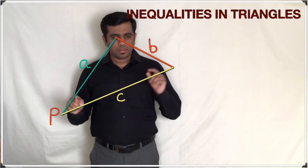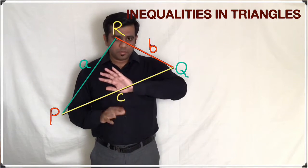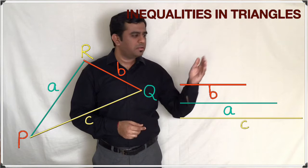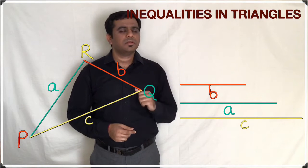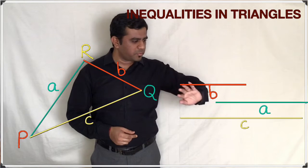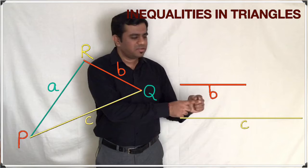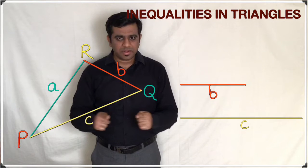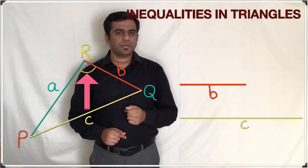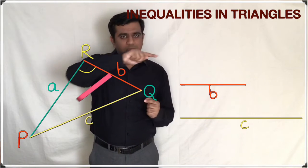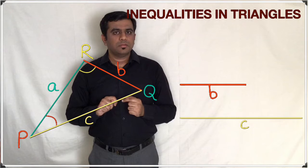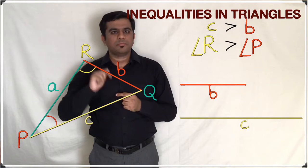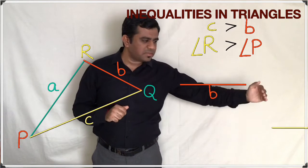Let's take the triangle again with sides a, b, and c, naming the vertices P, Q, and R. Comparing the sides, b is the shortest side, followed by a, and c is the longest side. If we compare only b and c, we see that side c is greater than side b. Side c has angle R opposite to it and side b has angle P opposite to it, so if c is greater than b, then angle R is greater than angle P.